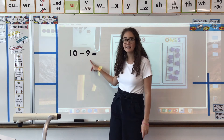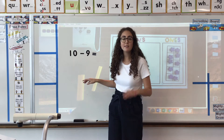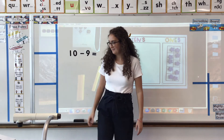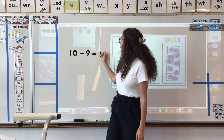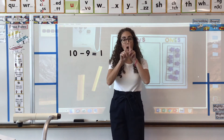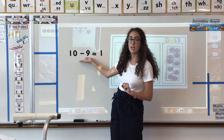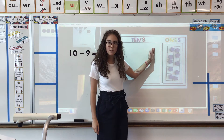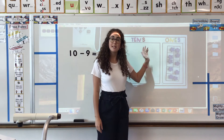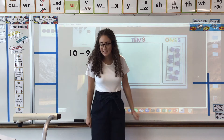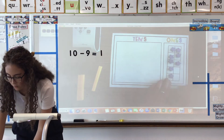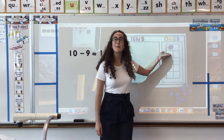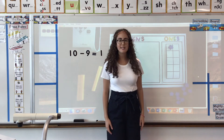The first equation we are going to look at is a pairs to 10 fact: 10 minus 9. Most of us have already solved this problem. 10 minus 9 is what? It is 1, because 9 and 1 are pairs to 10. Therefore, when you take one of them away, you're left with the other. Looking at our place value chart, we can show 10 minus 9 by starting with these 10 and taking away 9 from that. And what are we left with? We're left with 1 — exactly what we said.